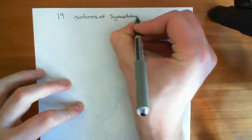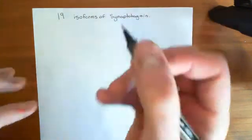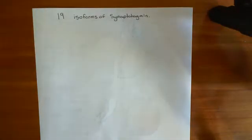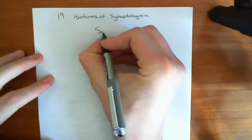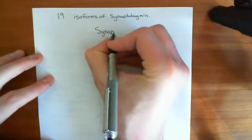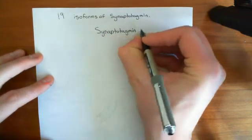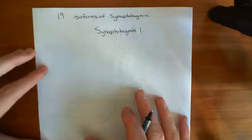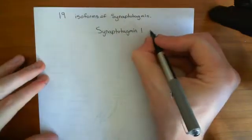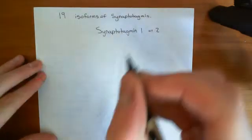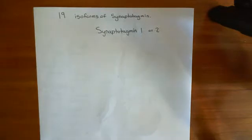Which isoform is most commonly found in neurons? The most common one is synaptotagmin 1, so that's the one we'll spend most of our time discussing. Synaptotagmin 2 is also found in neuron axon terminals, but synaptotagmin 1 is the main one. Both synaptotagmin 1 and 2 are found in neurons and are both involved in the release of neurotransmitter in response to calcium signaling.